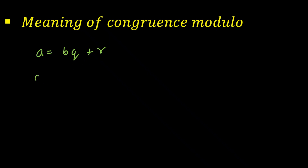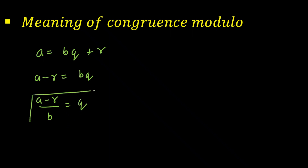Any number can be written in this form. Now, taking R to the other side, I can write this as A minus R is equal to BQ. A represents the dividend, R represents the remainder, B is the divisor, and Q is the quotient. One more way to write this: A minus R divided by B is equal to Q. Now I can convert this same form into congruence form: you can write this as A is congruent to R mod B.